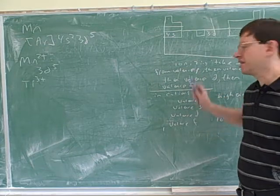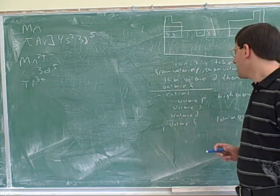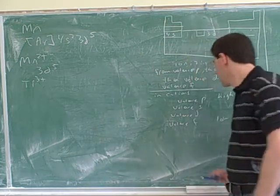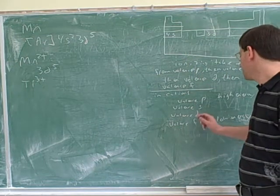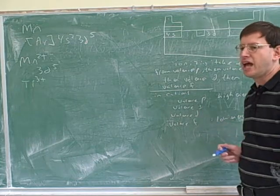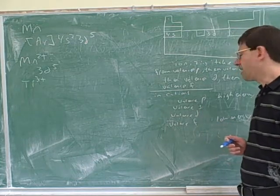This is equivalent to what I said here. If you're making a cation, these are the energy levels of the various blocks. Valence F would be lowest in energy, then D, then S, and P would be highest in energy.